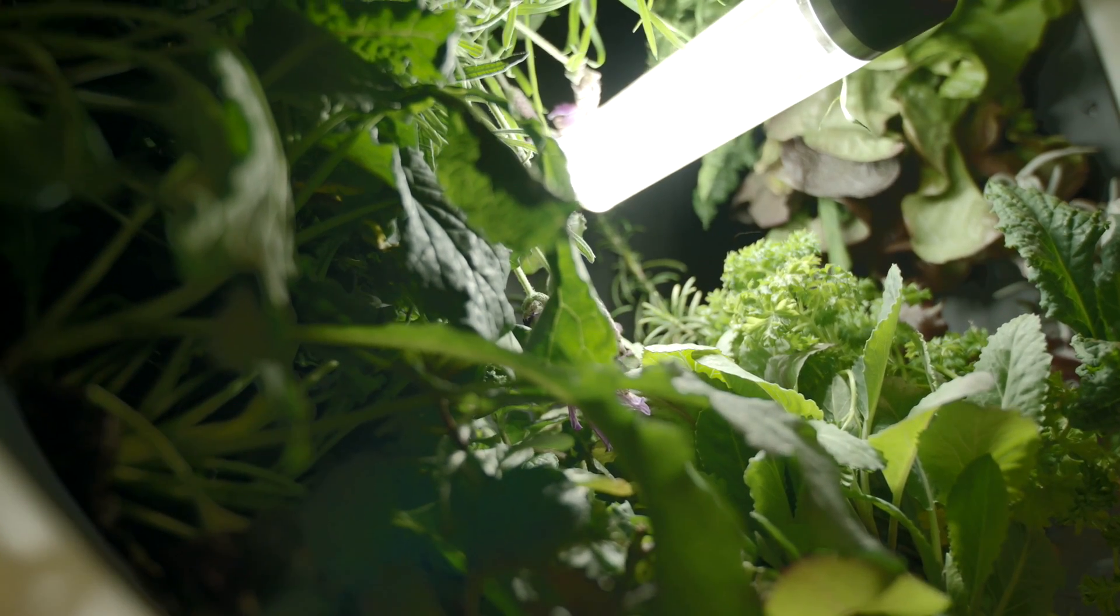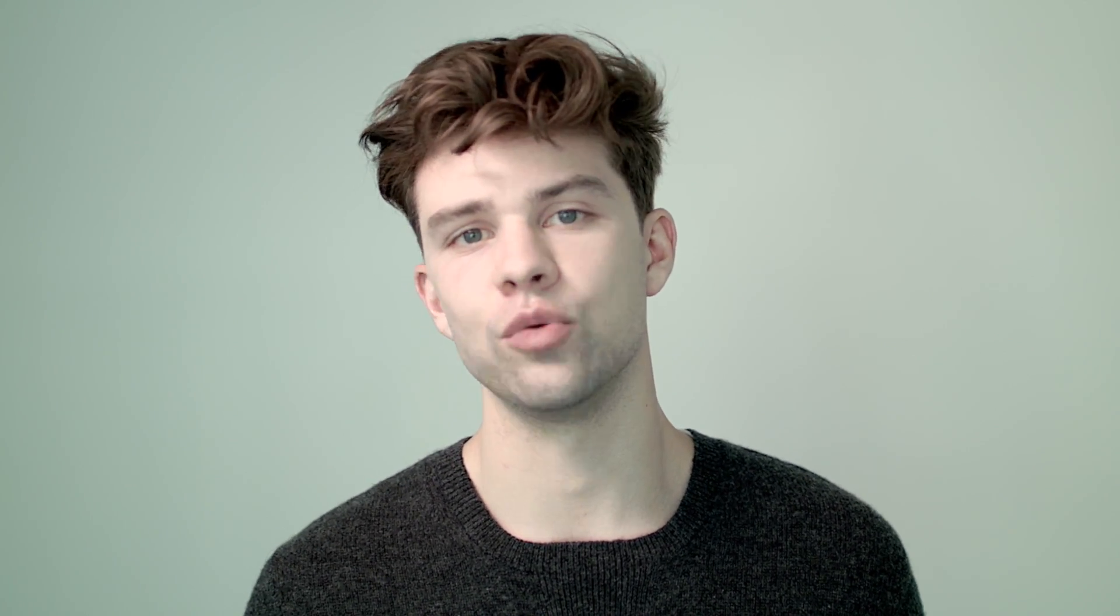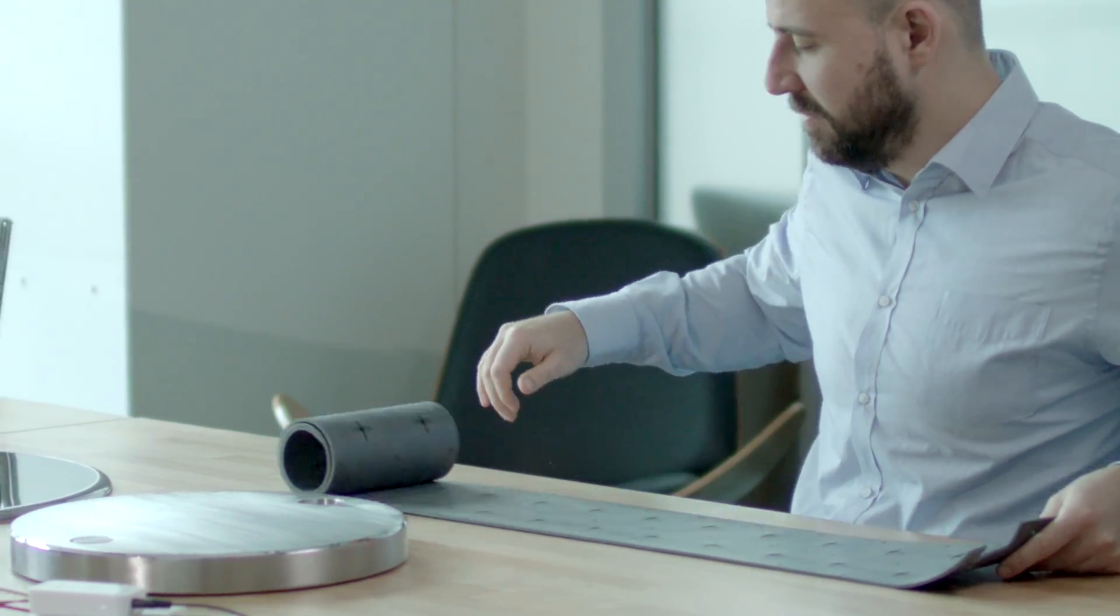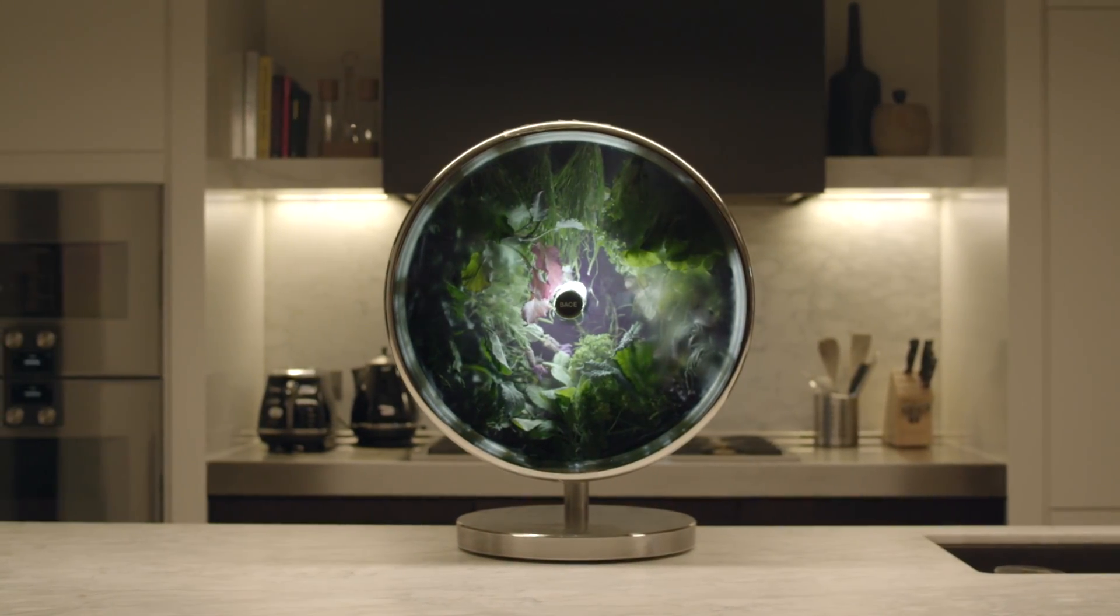By doing this we achieve major advantages, the biggest being space. If you were to unravel this farm bed you would create a 1.5 meter long flat growing surface all in a 30 centimeter footprint on a kitchen countertop.